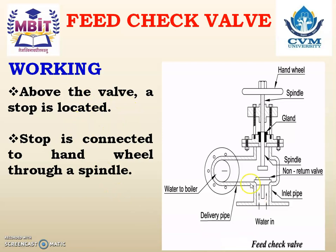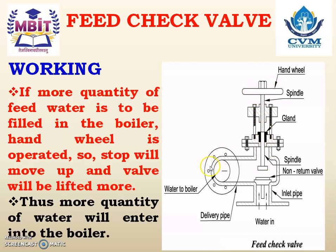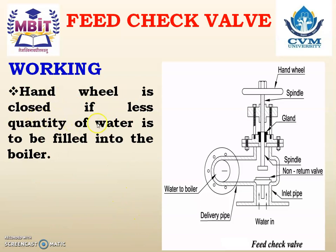Above the valve, a stop is located, connected to a hand wheel through a spindle. If more quantity of feed water is to be filled inside the boiler, the hand wheel is operated, causing the stop to move up and the valve to be lifted more — the stop decides the operating range of the non-return valve. If the hand wheel is operated and the stop moves up, more water enters the boiler. The hand wheel is closed if less quantity of water is to be filled.